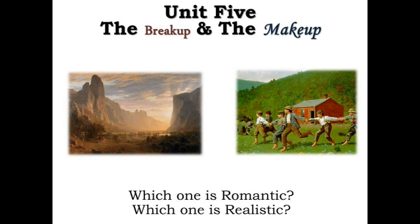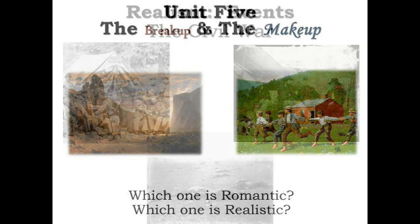What did you notice that was the same and what did you notice that was different between the two images? When we look at realism, we want to look at how the world is portrayed in our everyday life. The painting on the left is an example of Romanticism, and the painting on the right is an example of Realism. Look at the colors and the saturation of the faces. The subject moves from being centered on a natural image to one that is centered on a human image.